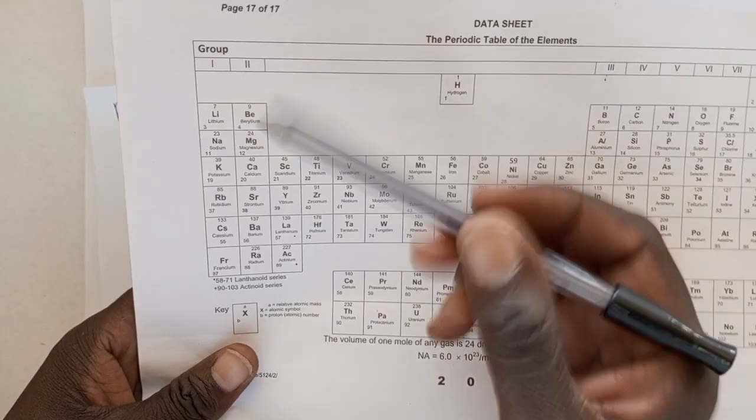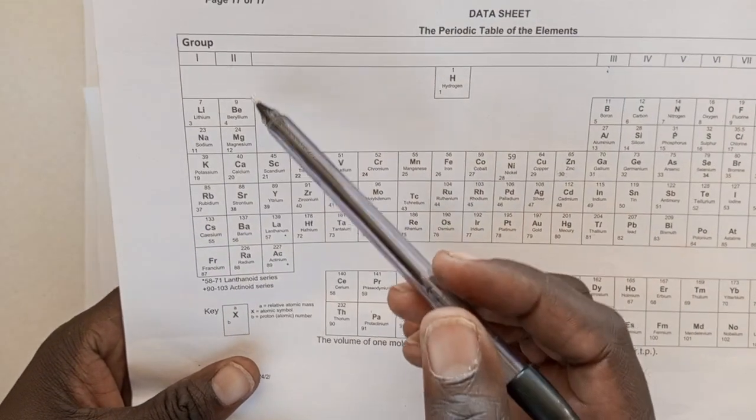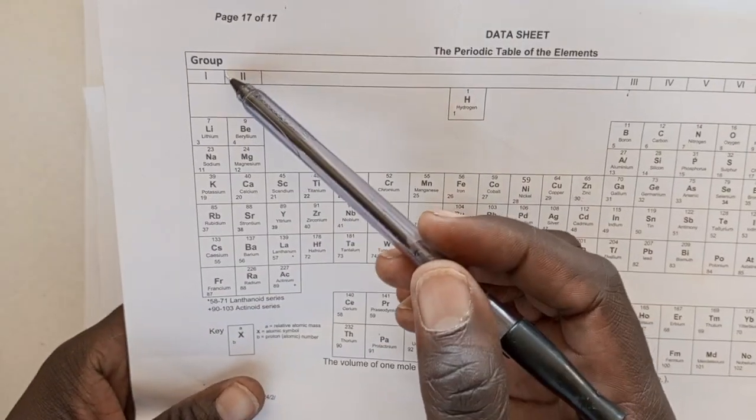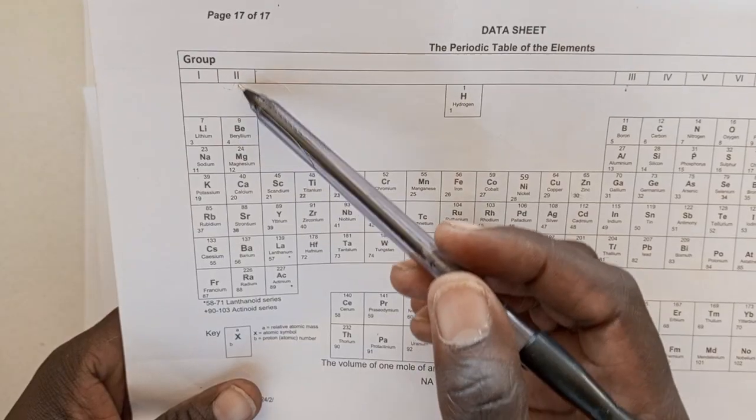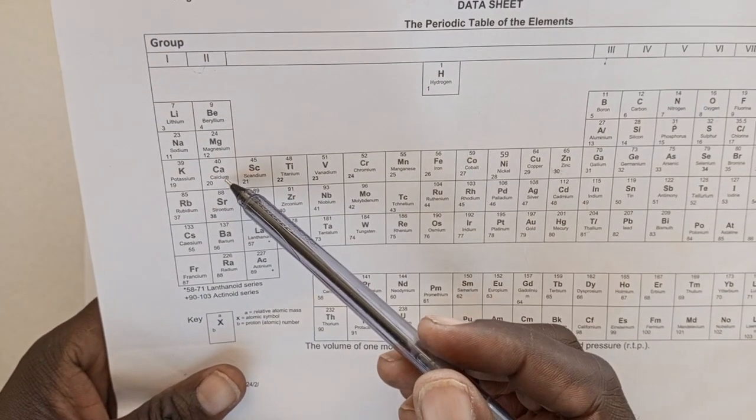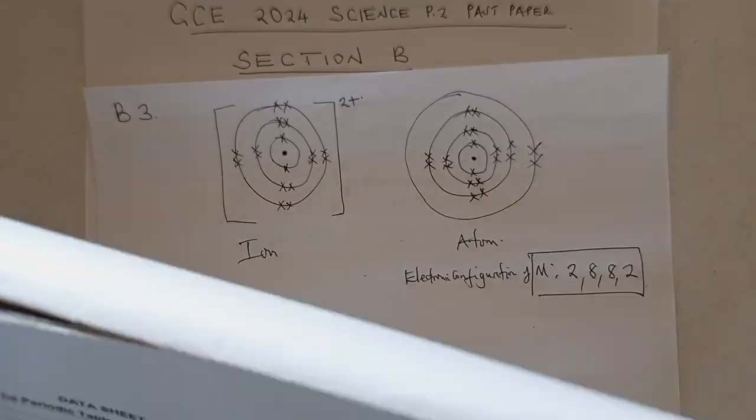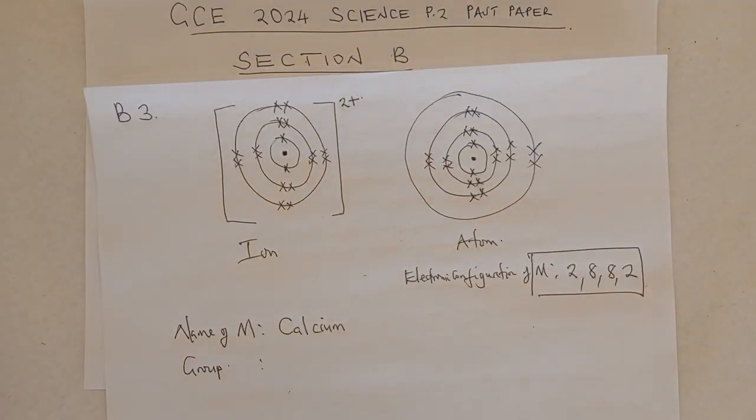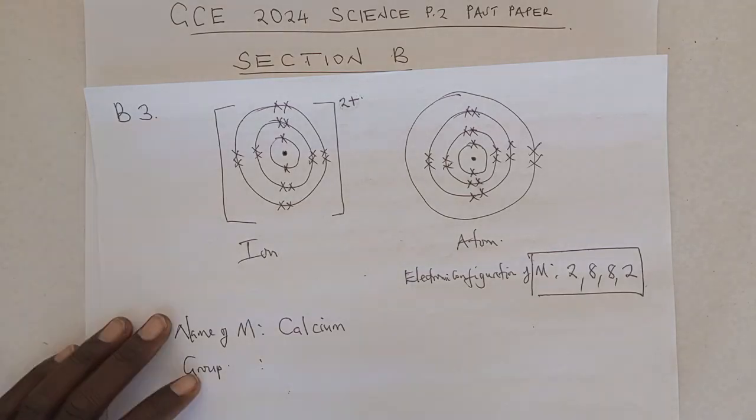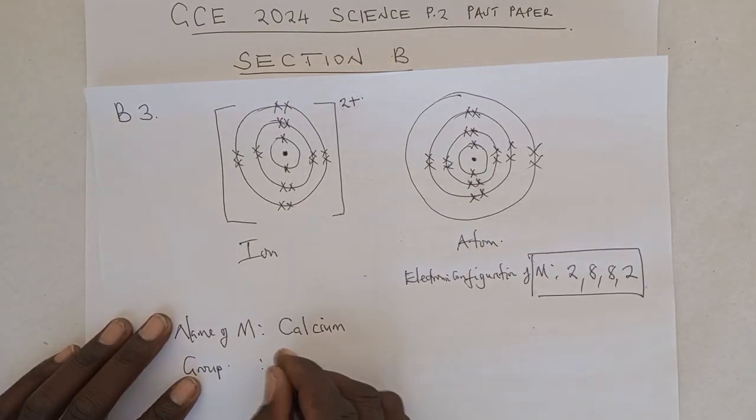So, we come here. On the periodic table, since it lost 2 electrons, it must be found in group 2. It has a valence of 2. So, calcium is found in group 2. So, even before coming to the periodic table, you can be able to tell that calcium is in group 2. Why? Because it has lost 2 electrons. So, the group is group 2.